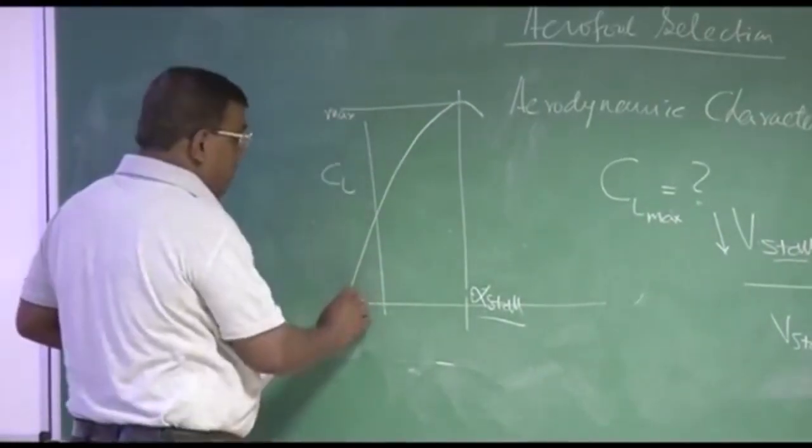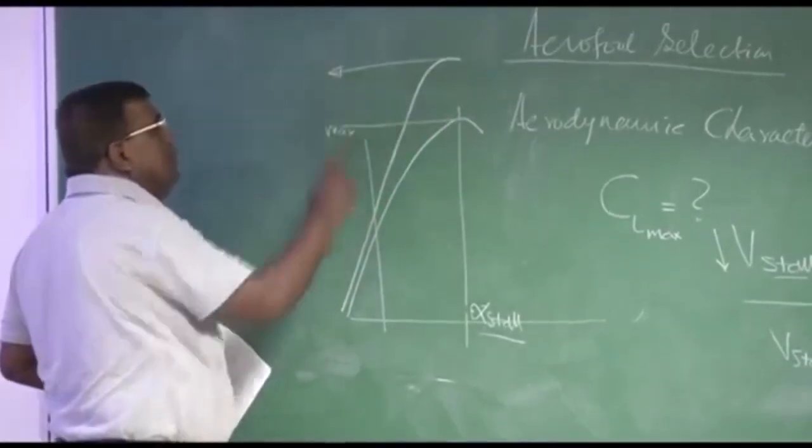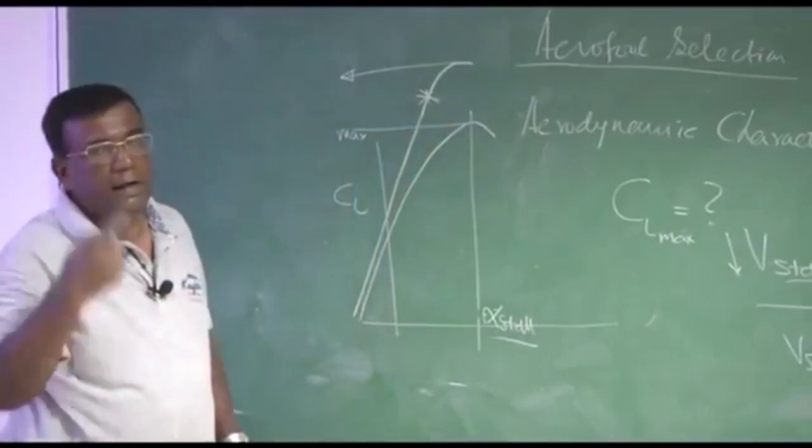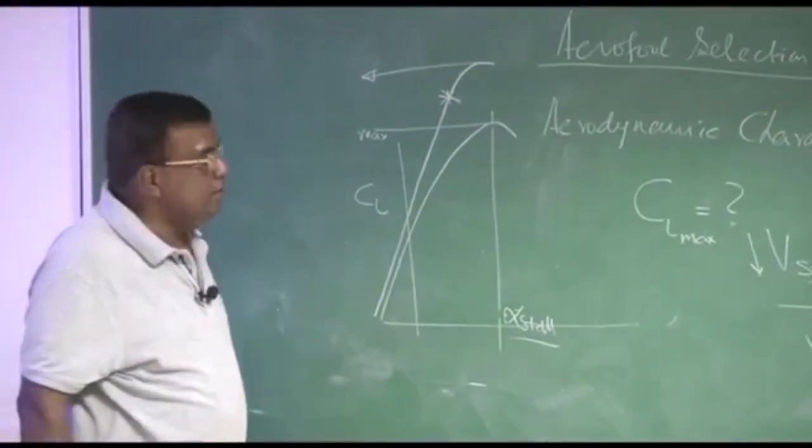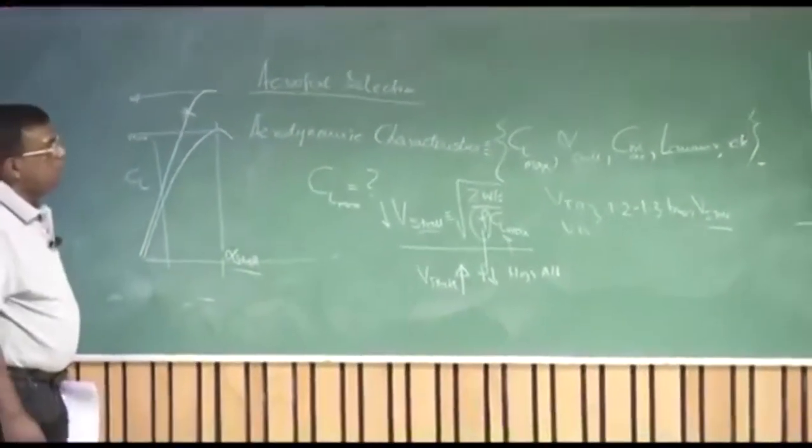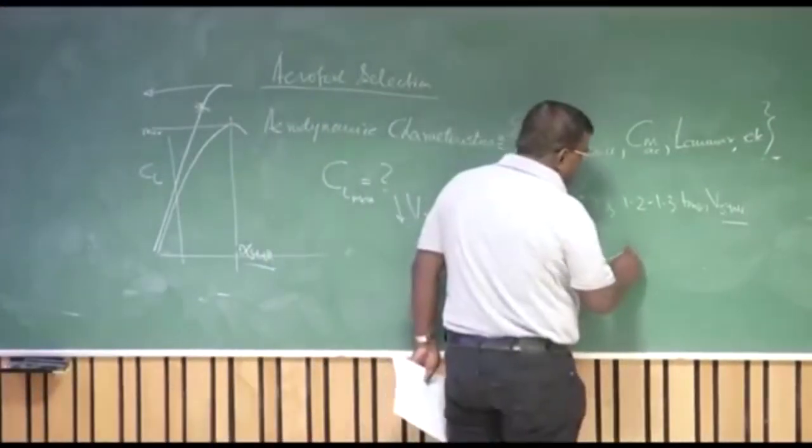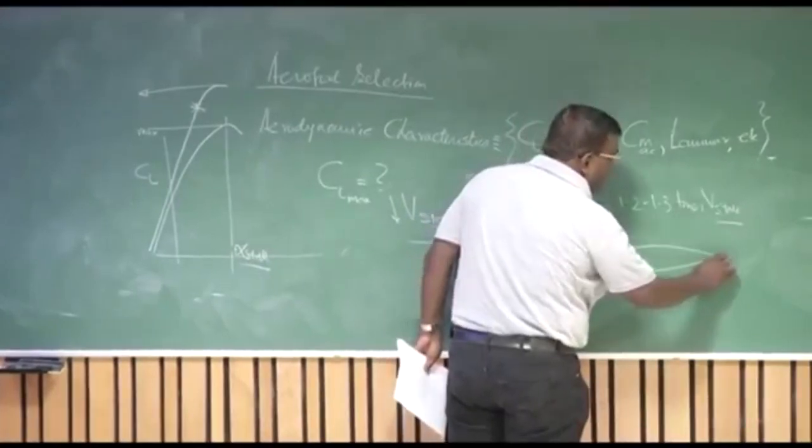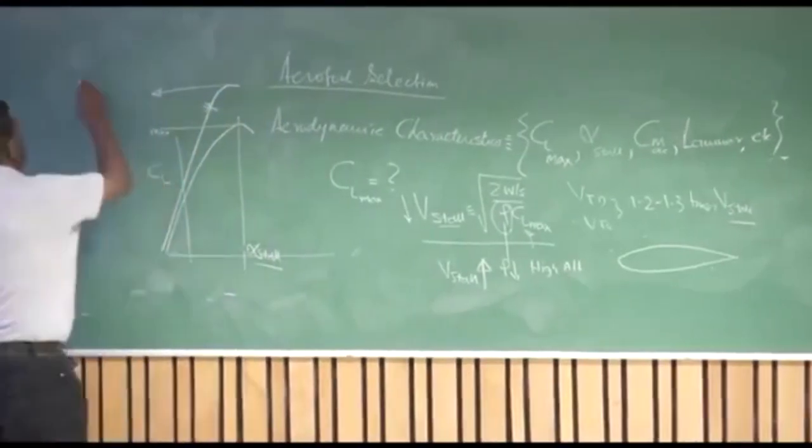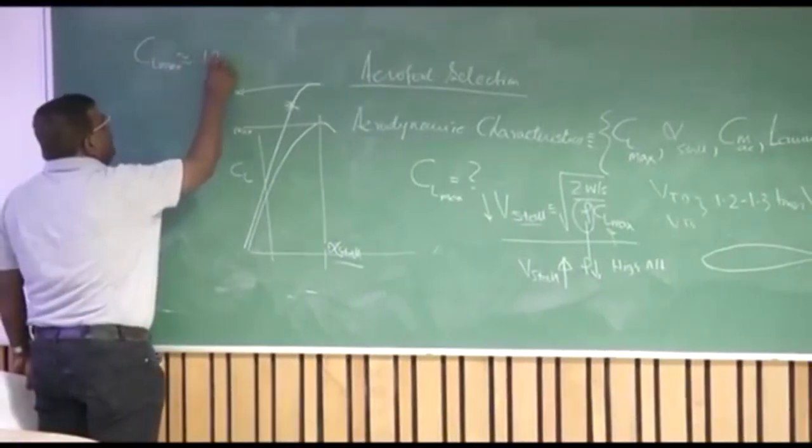So instead, if you have something, the CL max is higher, because of aerofoil or because of other considerations, you can as well fly here during takeoff and landing. So you are safe. So there is a reason why you want to operate at high CL max. So what we do by selecting an aerofoil, we try to see what is that aerofoil shape for which I will get CL max higher. Typically you will find for conventional aerofoil, symmetric and all, the CL max is almost saturated at 1.2.